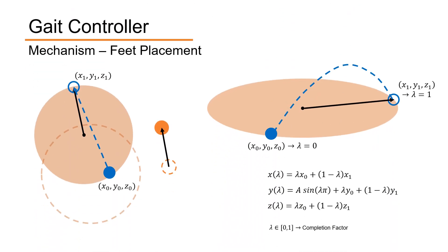The new foot position is a point on the circumference that's along the direction of the hip motion, as indicated by the black arrow here. The movement happens in a specific amount of time, and the pattern followed is a linear interpolation from the initial point to the final one. The elevation follows a sinusoid added to the linear interpolation.